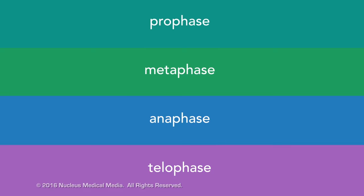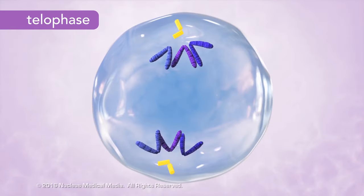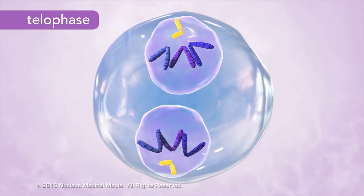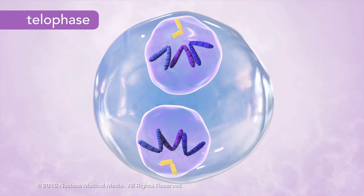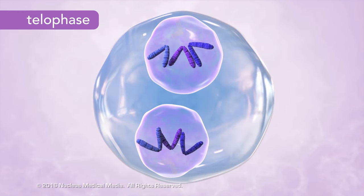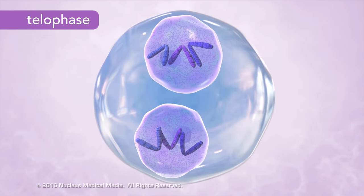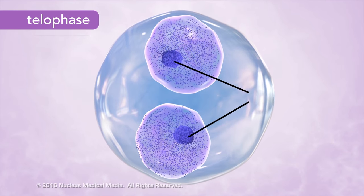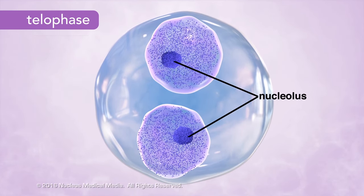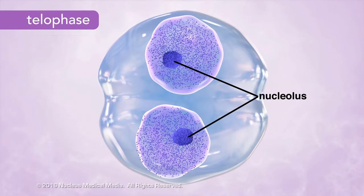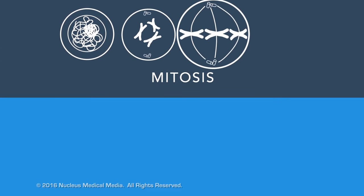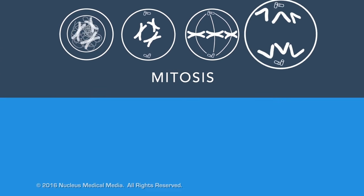Telophase is the final stage of mitosis. In telophase, a nuclear membrane reforms around each set of chromosomes. Then the chromosomes spread out into chromatin, and the nucleolus becomes visible once again. Mitosis, the division of the nucleus, is now complete.